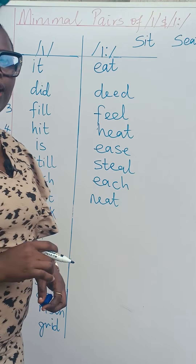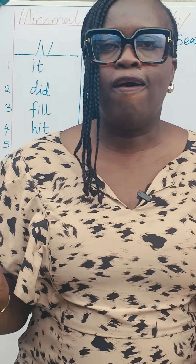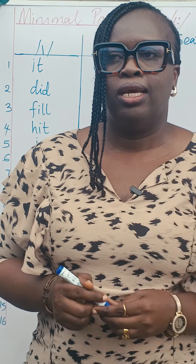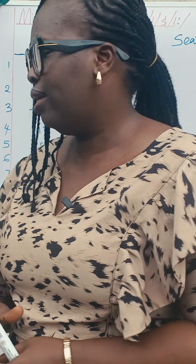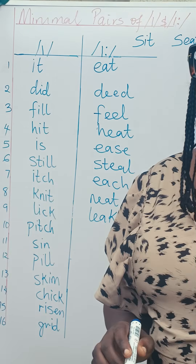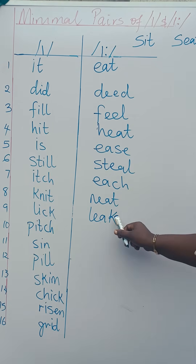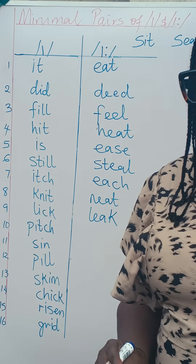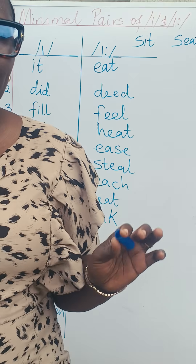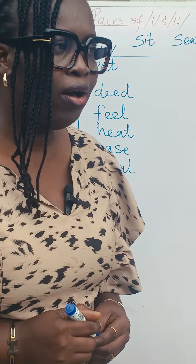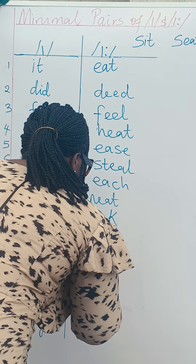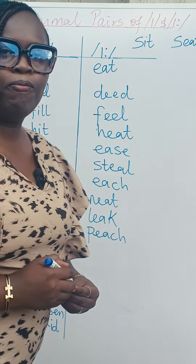Number nine: lick, L-I-C-K — I want to lick an orange. And leak — the tank is leaking, L-E-A-K. Then pitch, P-I-T-C-H — a football pitch. And a peach color, P-E-A-C-H.